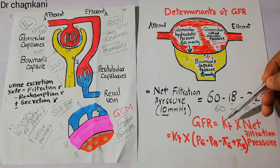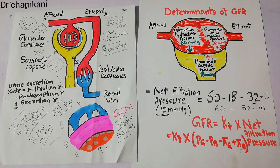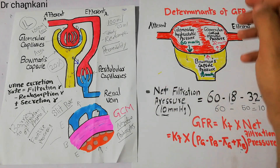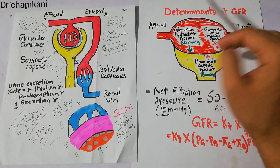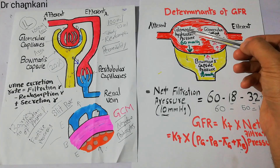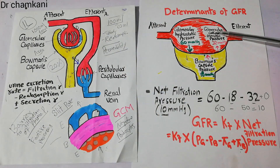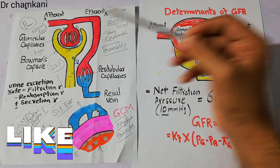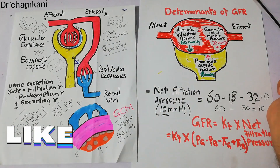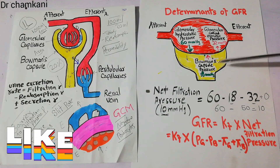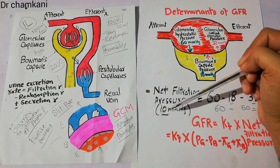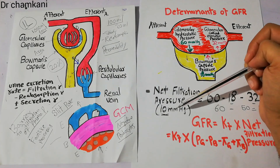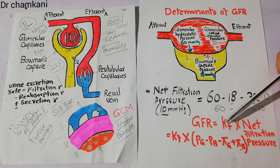In coming lectures we will discuss the capillary filtration coefficient and the factors that increase or decrease it. For this lecture, we covered the main determinants of GFR: glomerular hydrostatic pressure, glomerular colloid osmotic pressure, and Bowman's capsule hydrostatic pressure — with a net filtration pressure of around 10 mmHg. Thanks for watching the video.